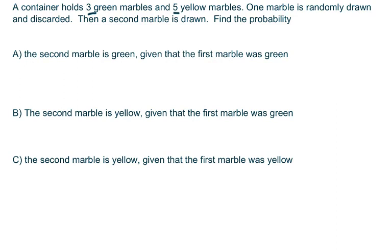The probability that the second marble is green, given that the first marble was green. You're going to find the probability that the second marble is green, and that's going to be 3 out of 8 times 2 out of 7. The first marble being green is 3 out of 8. So your total probability is 2 out of 7.